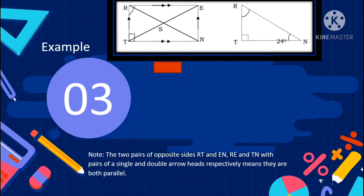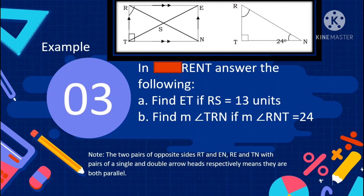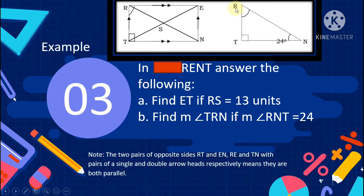Example number 3: in rectangle R, E, N, T, answer the following. Letter A: find ET if RS equals 13 units. Letter B: find the measure of angle TRN if angle RNT equals 24 degrees.